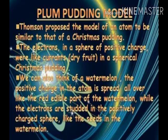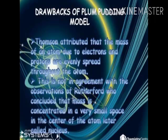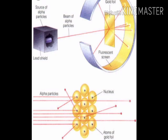Now we will look at the limitations or drawbacks of the plum pudding model. Thomson attributed the mass of an atom to electrons and protons evenly spread throughout the atom. This is not in agreement with the observations of Rutherford, who concluded that the mass is concentrated in a very small space at the center of the atom, which was later called the nucleus. Rutherford showed this through his gold foil experiment.